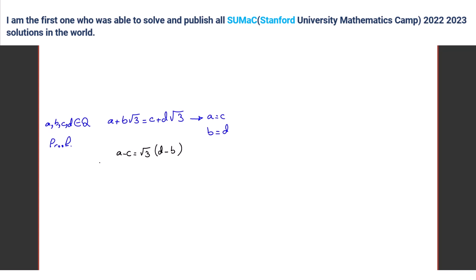Yeah, but since a and c are rational numbers and d and b are involved — you can't multiply a rational number and turn irrational times irrational into that. So you can write it like this: case one, if d is not equal to b, then the denominator is not zero, and because it is rational over rational it's rational. That's a contradiction because root three is not a rational number.